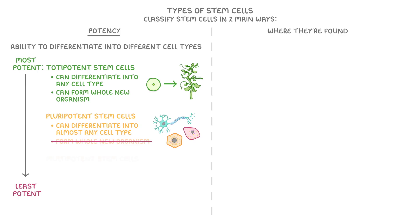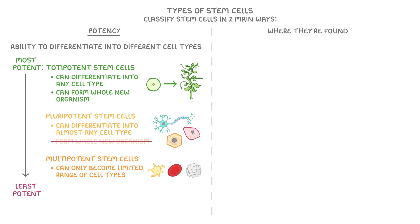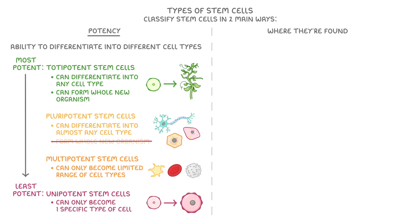Then after that, we have multipotent stem cells, and these can become only a limited range of cell types. An example here would be the stem cells in bone marrow that can only become blood cells. Then the least potent are unipotent stem cells, which can only become one specific type of cell — for instance, germline stem cells in the ovaries that can only become egg cells.